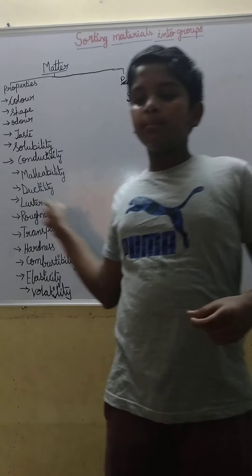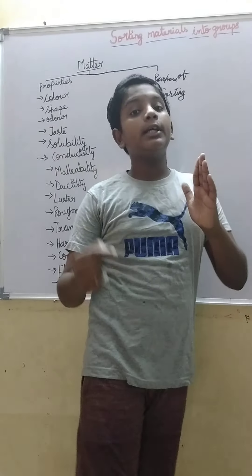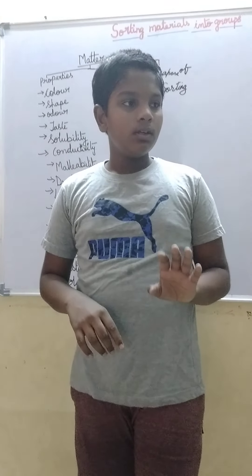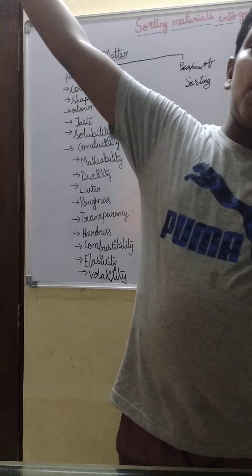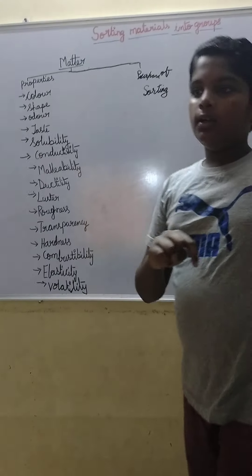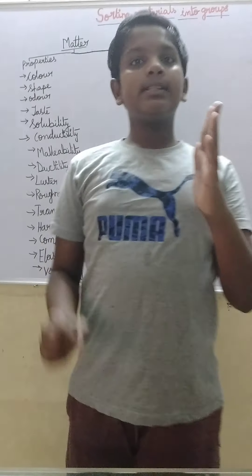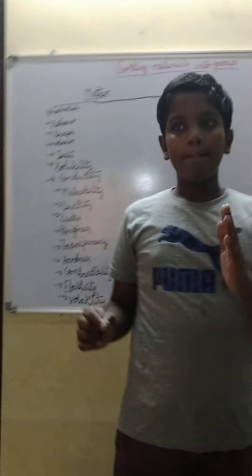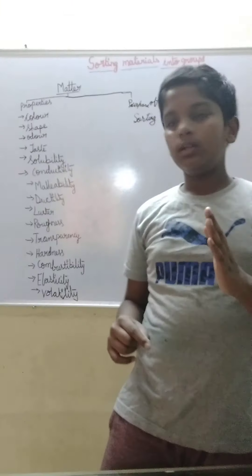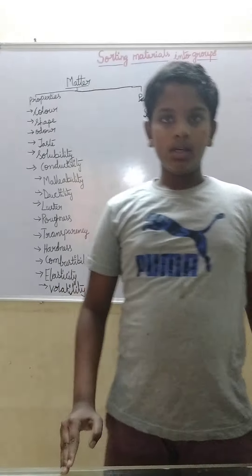Transparency. Transparency describes how much light passes through an object. A transparent object, like a window pane, allows sunlight to pass through completely from outside to inside. A translucent object, like butter paper, allows only some light through. And an opaque object, like cardboard, does not allow any light to pass through at all.